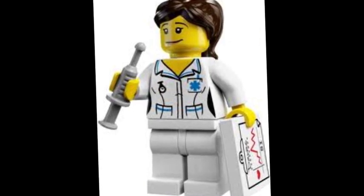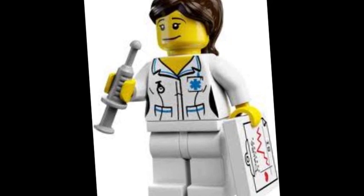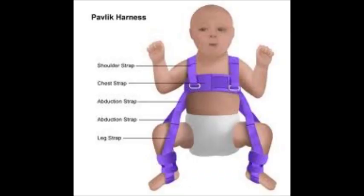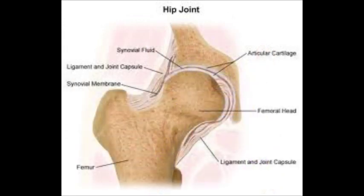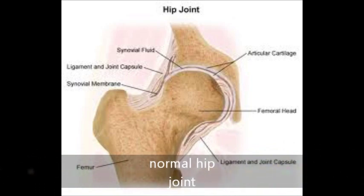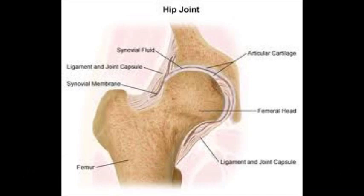The treatment for congenital hip dysplasia varies according to the age of the patient. From birth to 6 months, the patient will be placed in a Pavlik harness. This device holds the hips in a flexed and abducted position. The pressure exerted on the acetabulum enlarges the joint, helping to correct the dislocation. Over time, the newborn's body will adapt to the correct position and the hip joints will begin to form normally. 90% of newborns treated with a Pavlik harness will make full recoveries.